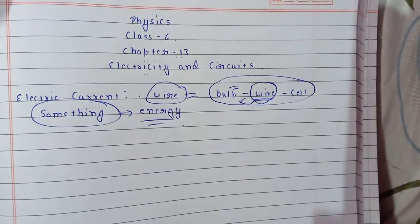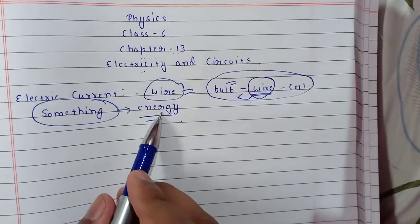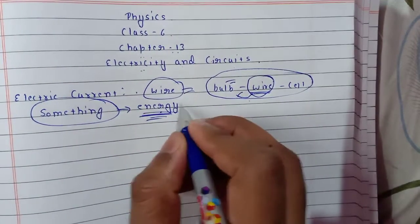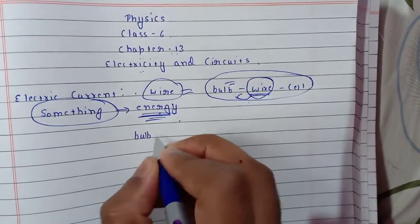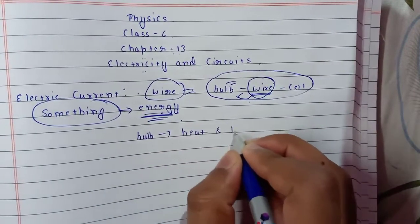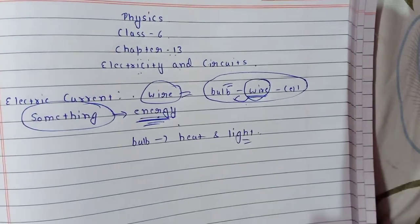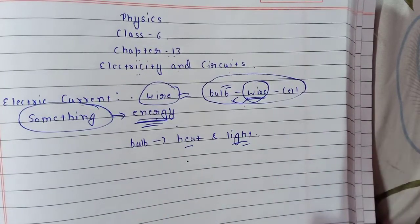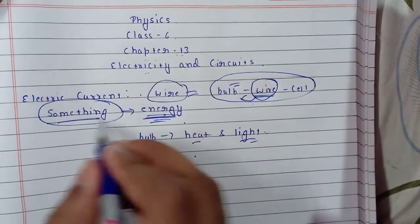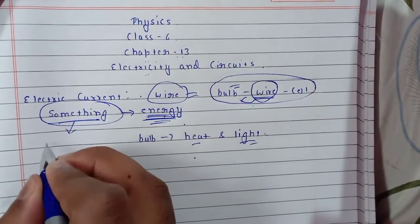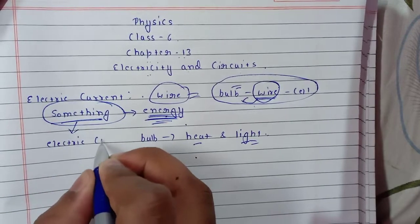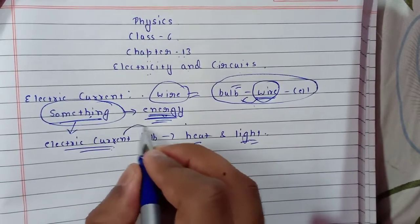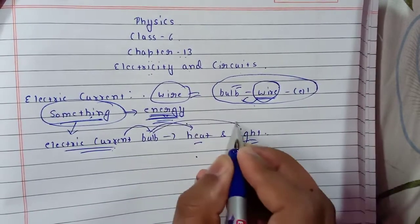What kind of energy can it be? If this energy is not in the wire, then the bulb will not produce heat and light energy. If it has energy, then heat and light energy will be produced. We call this something — this energy is called electric current.